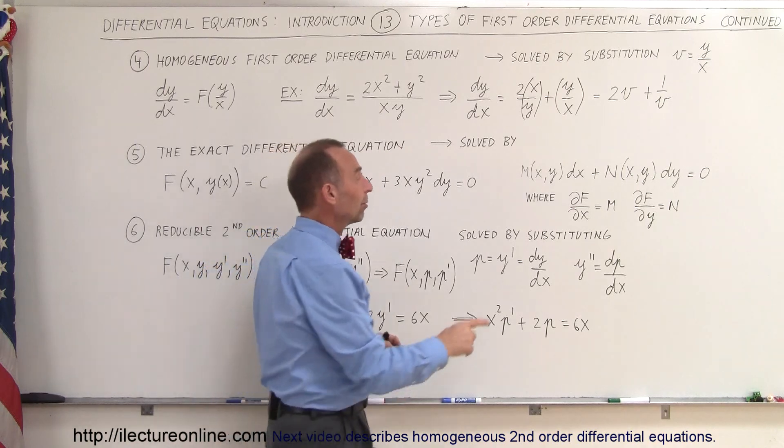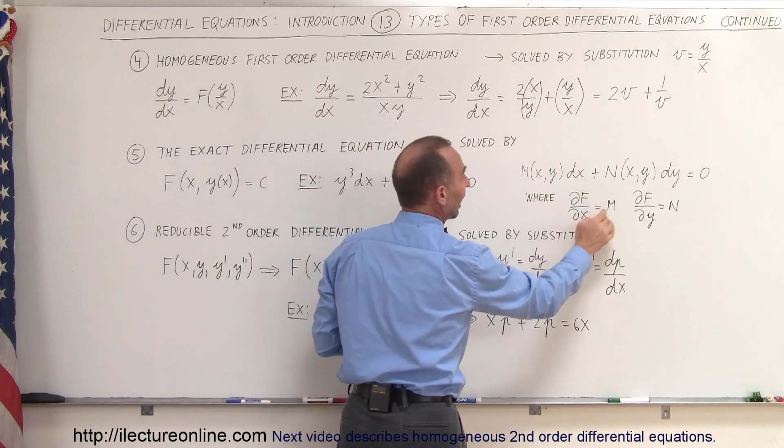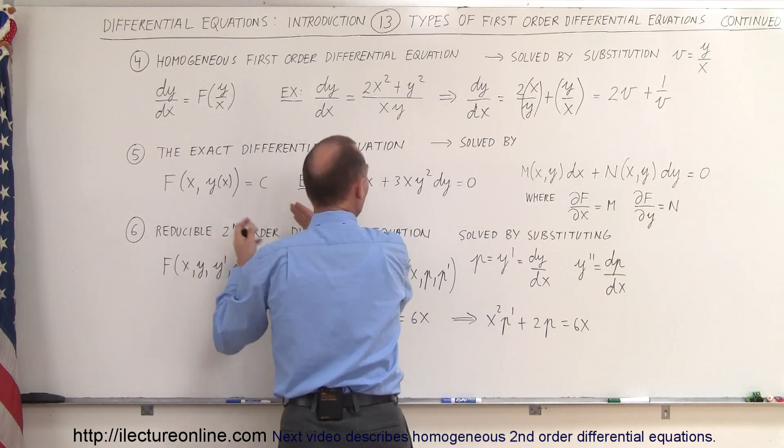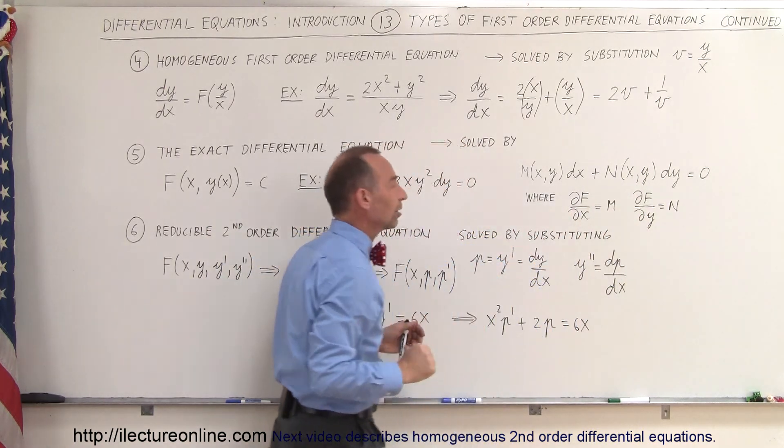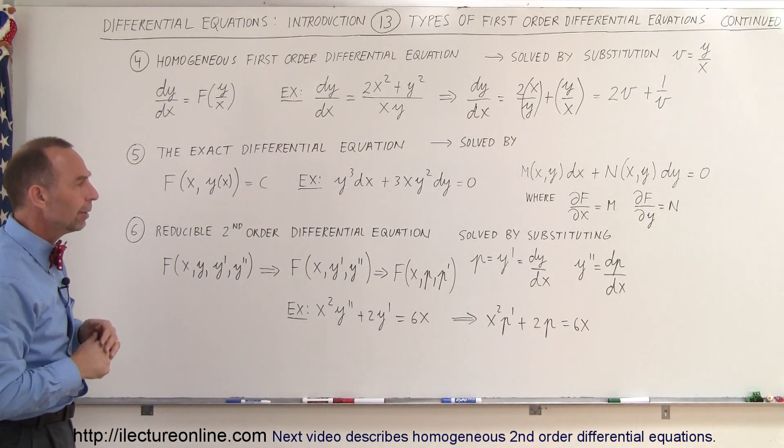And the condition is such that the partial derivative of your original function with respect to x, and the partial derivative of your original function with respect to y, that they can be set equal to each other. And so, we'll show you how to do that technique later.